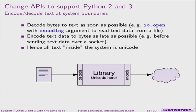One recommendation is to encode and decode text at system boundaries. For example, when reading a file from the file system, decode it; and later if you want to send it over a socket to another host, encode it — but only then. You should try to have most of your code deal with Unicode strings, so you can confidently know the locations where it's Unicode and where it is not.